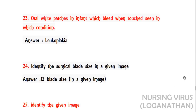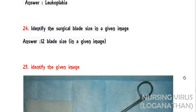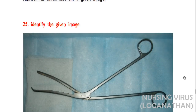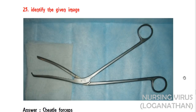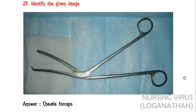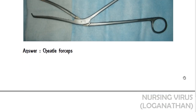The twenty-fourth question: identify the surgical blade size in the given image — the answer is blade size number 12. The next question: identify the instrument in the given image — it is Cheatle forceps, commonly used to transfer sterilized instruments, gauze pieces, or gauze pads from the bin.